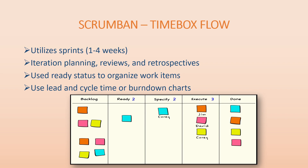The second type is Scrumban Time Box Flow, where we have sprints lasting from one to four weeks. It includes sprint planning, sprint review, and sprint retrospective meetings. Work items are organized using a 'ready' status. Key metrics include lead time, cycle time, or burndown charts — burndown charts show how many story points remain to complete the project.